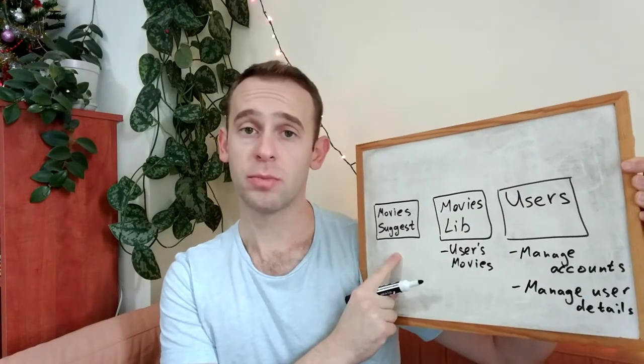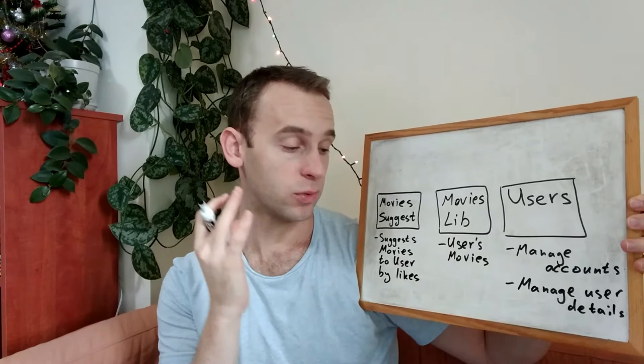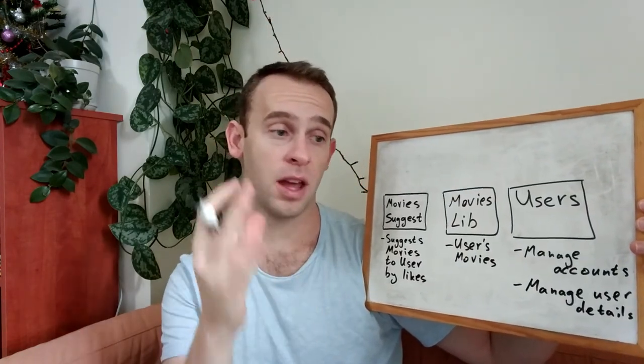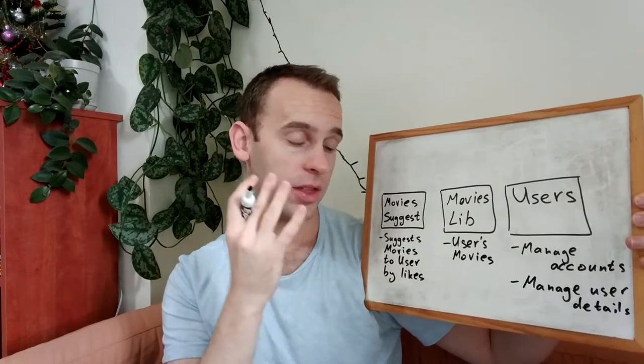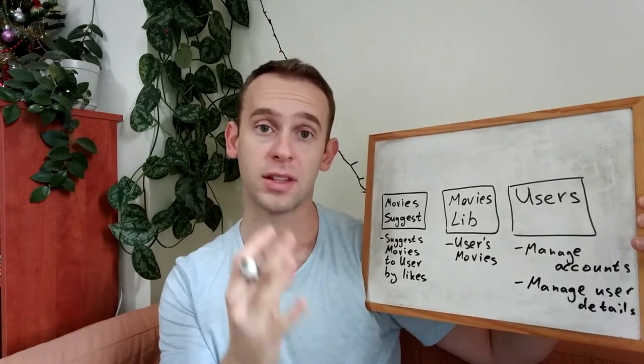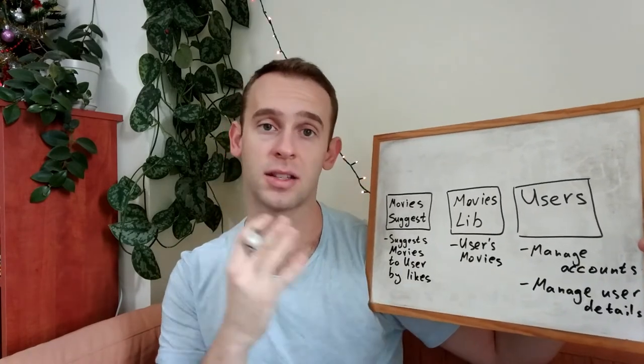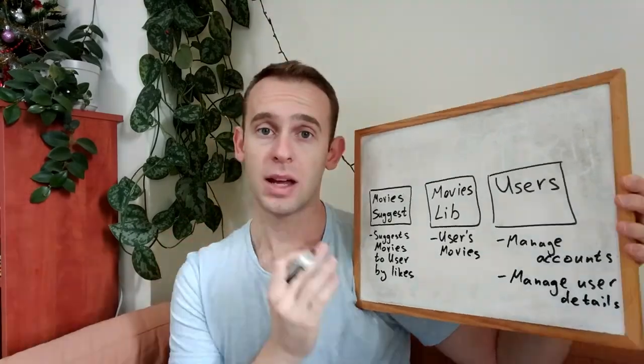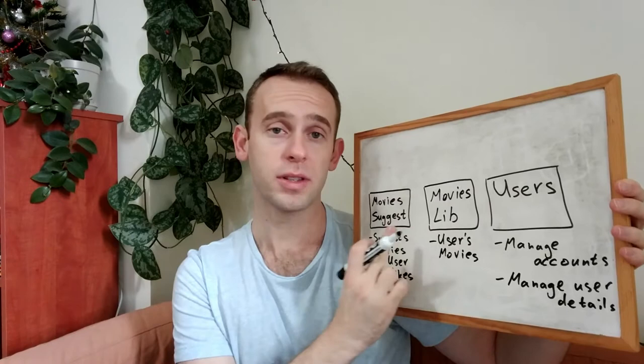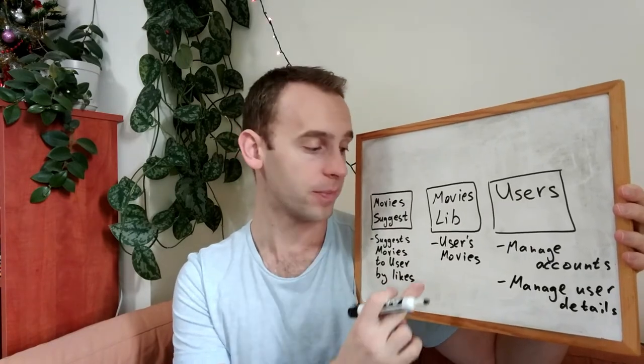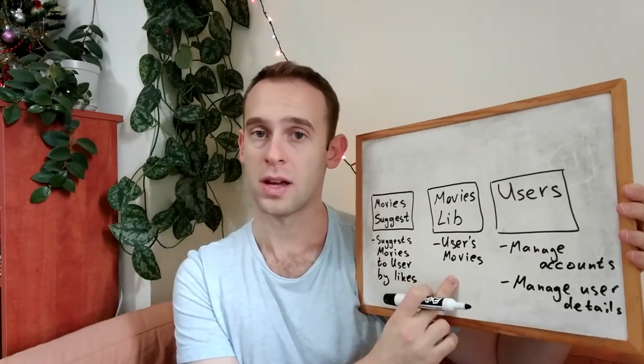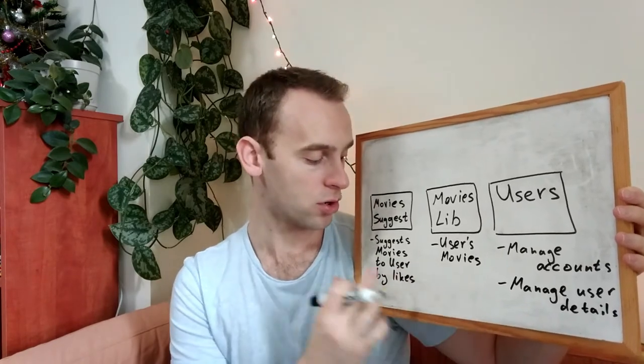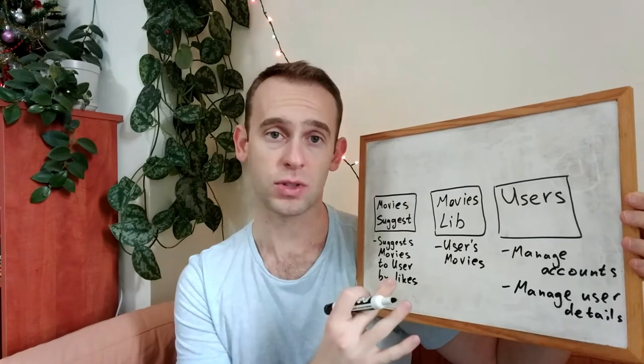And we have a movies suggestion module whose responsibility is to suggest movies to the user by the movies he liked. It can be a machine learning algorithm that looks at the movies the user likes and suggests movies that the user probably will like. As you can see these two modules, they rely on the logged in user. They show the movies of the users, the libraries of the movies and suggest movies to the specific user.